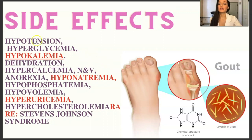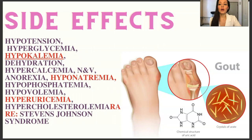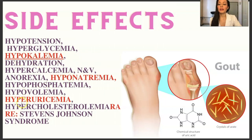Side effects of thiazide diuretics can include hypotension — sometimes too much of a good thing is a bad thing, so watch whether their blood pressure drops too much. They can also cause hyperglycemia, meaning thiazide diuretics can raise blood glucose. Hypokalemia is very significant and important to monitor because it can affect heart rhythm. Other side effects include dehydration, hypercalcemia, and nausea and vomiting. The primary one to focus on in nursing school is hypokalemia — monitor their potassium. Hyponatremia is also important but hypokalemia is what you'll normally be tested on.